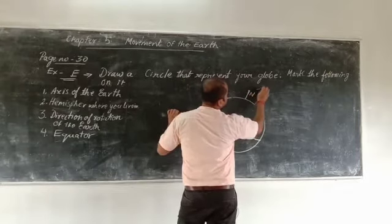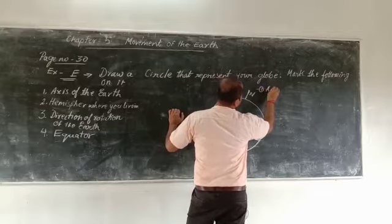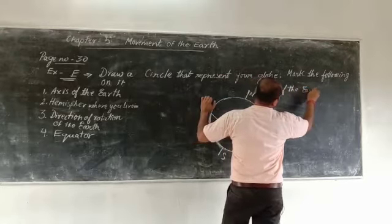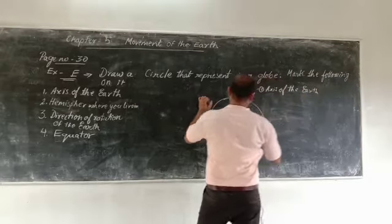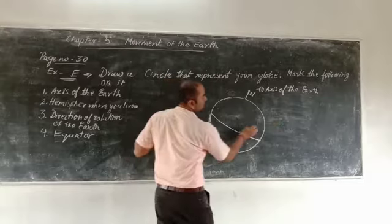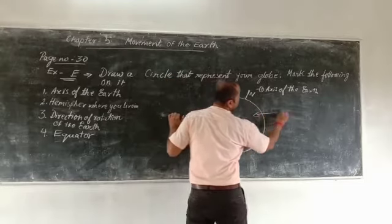Answer number one, you have to mention like this: number one, axis of the Earth. Then answer number two - because this is northern hemisphere, this is southern hemisphere - you will mention here number two.